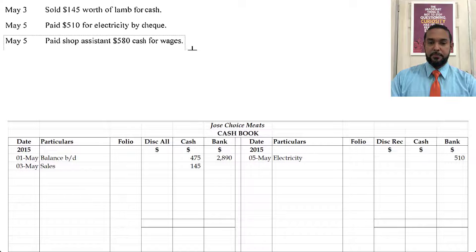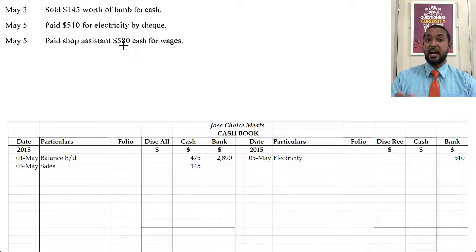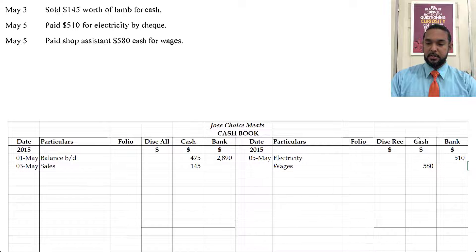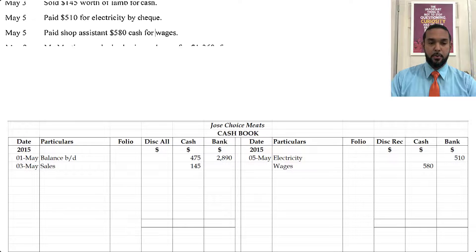Also on the 5th, we paid the shop assistant $580 cash for wages. Again, if we are making a payment, our cash is decreasing. Cash is an asset, and to record a decrease in an asset, you have to credit the asset account. So you're going to see under the cash column on the credit side, $580. What did we pay? Wages.